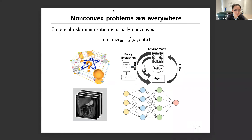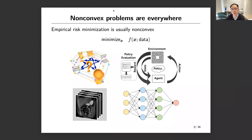I probably don't have to mention why non-convex optimization is important. We've really seen a lot of non-convex problems everywhere — in all sorts of applications ranging from computer vision to robotics, neural nets, reinforcement learning, and so on. In many of these problems, the loss function is highly non-convex in the decision variable, and we have pressing needs in dealing with non-convexity in all of these data science problems.